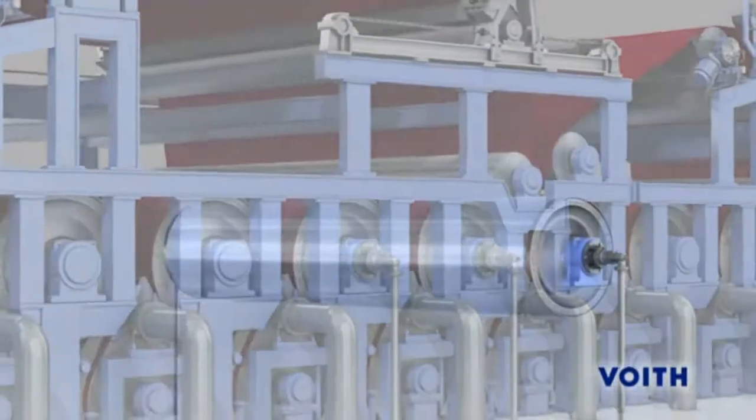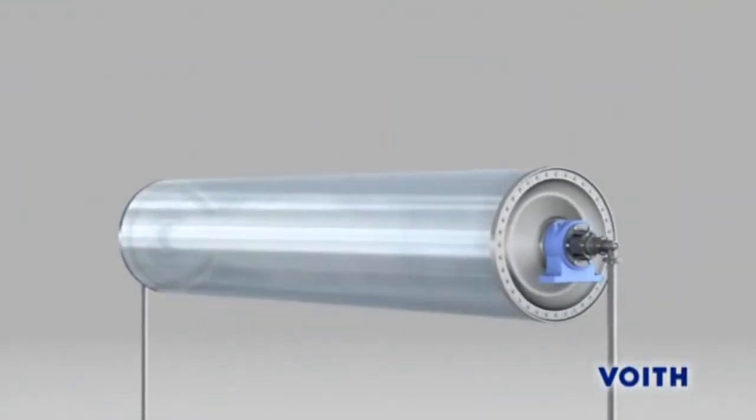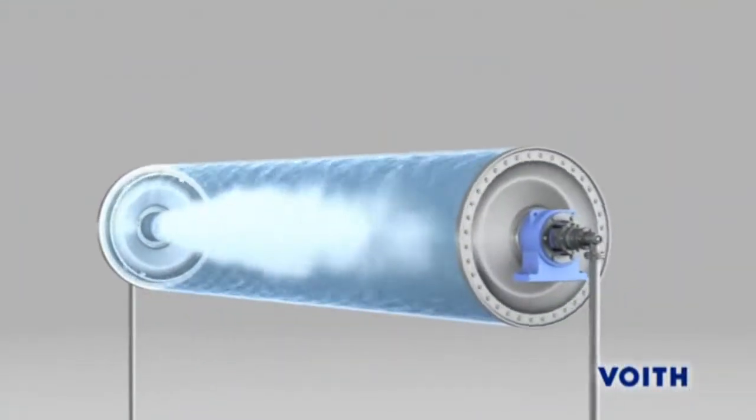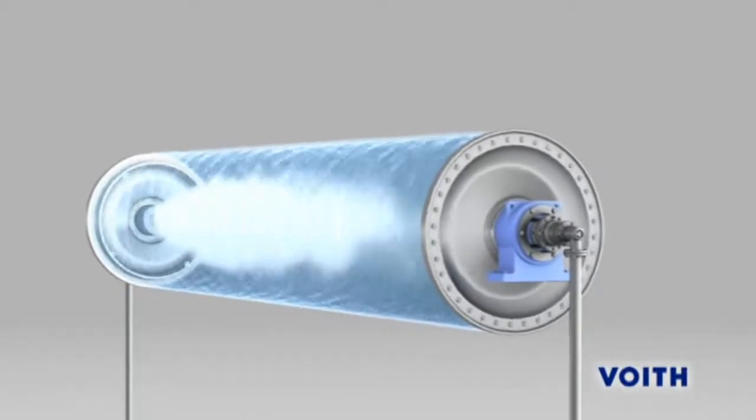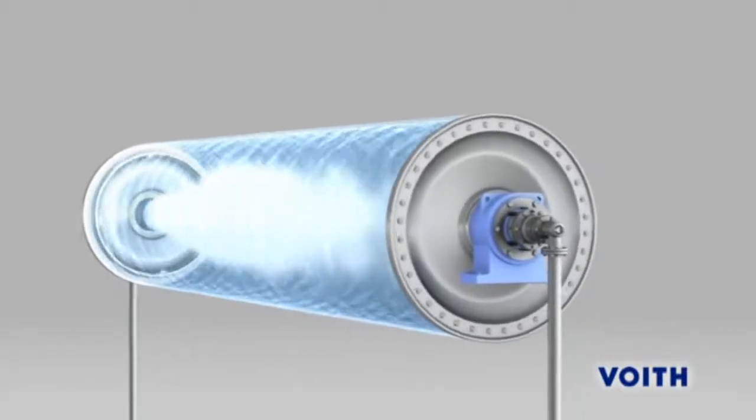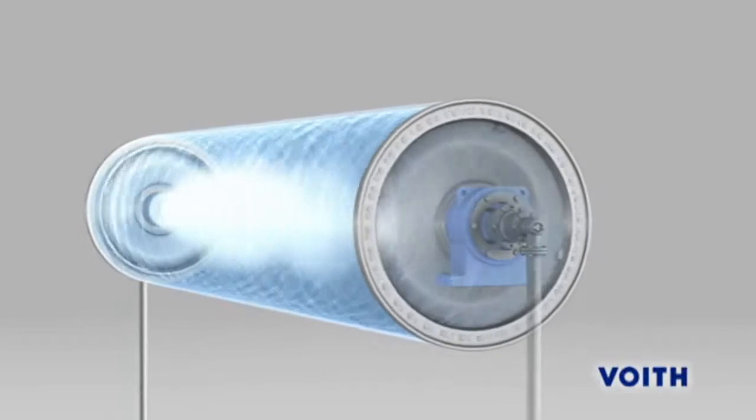Dryers are heated with steam. With increasing operating speed the condensate follows more and more the dryer shell. This is shown in slow motion in order to understand it better.